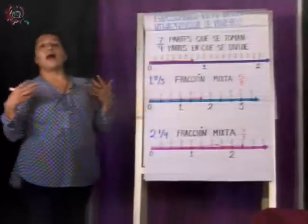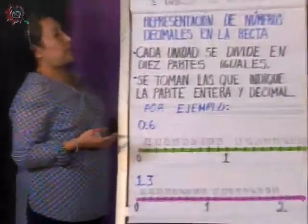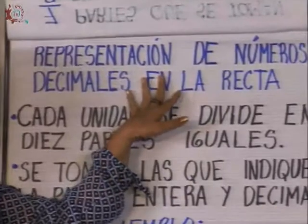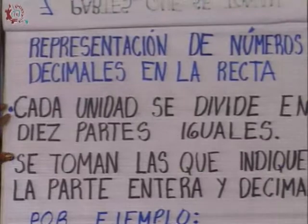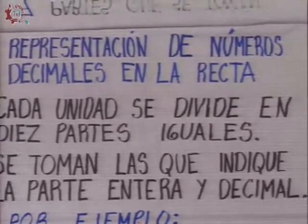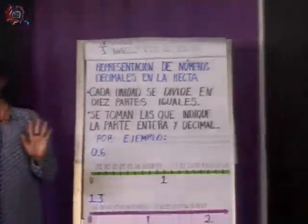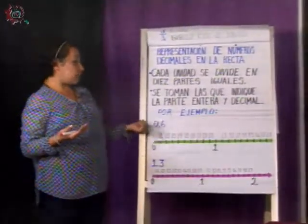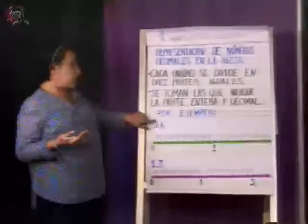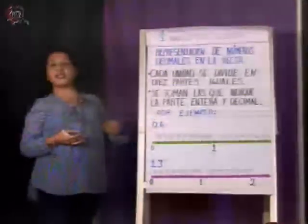Como mencioné, ahora podemos también trabajar con números decimales, no nada más con fracciones. ¿Cómo va a funcionar? Es muy similar, pero ahora tenemos otra regla. Para representar los números decimales en la recta numérica, cada unidad la tengo que dividir en diez partes iguales. A diferencia de lo anterior, aquí todas las unidades siempre van a estar divididas en diez partes, porque nuestro sistema es decimal y va de diez en diez. ¿Y cómo voy a saber cuántas tomar? De acuerdo a la parte entera y la parte decimal que me indican.